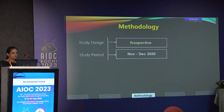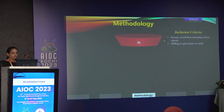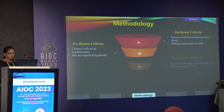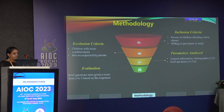We wanted to calculate the digital eye strain prevalence in our study cohort and find the association between parents' occupation and refractive error among children. The study was done prospectively over two months in which 305 parents were questioned. Inclusion criteria was parents of children attending online classes who consented to participate. A CAP questionnaire was conducted, with each response scored from 2 to 5.